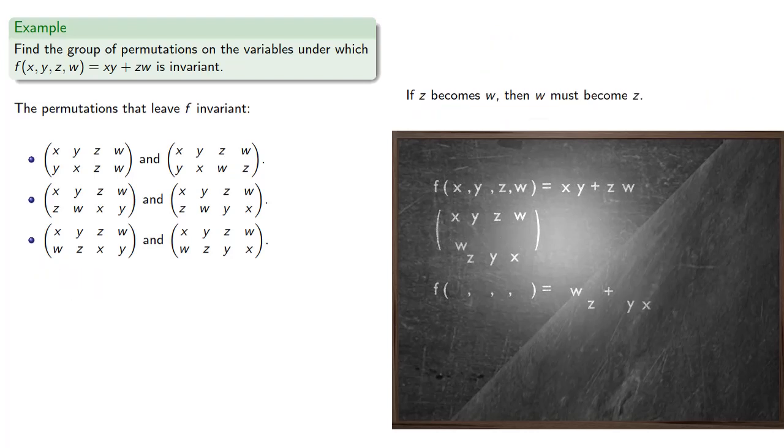If z becomes w, then w must become z. And, we'll leave x and y alone, because we've already considered all permutations that move x. And, let's not forget, we also have the identity permutation, e. And so, altogether, there are these permutations that leave f invariant.